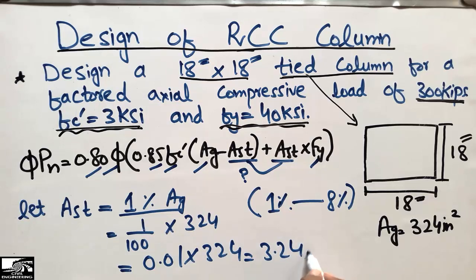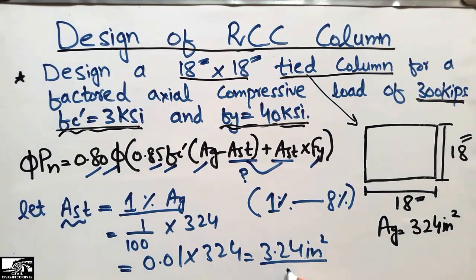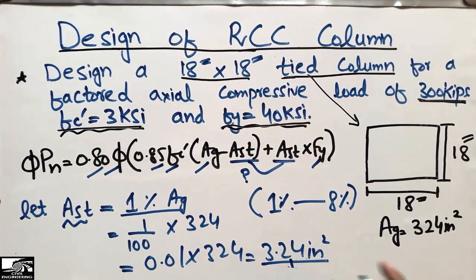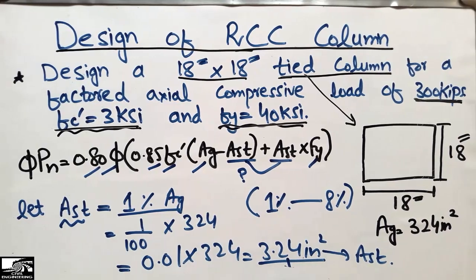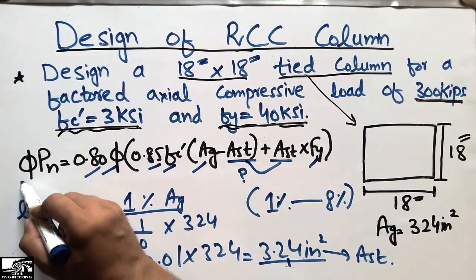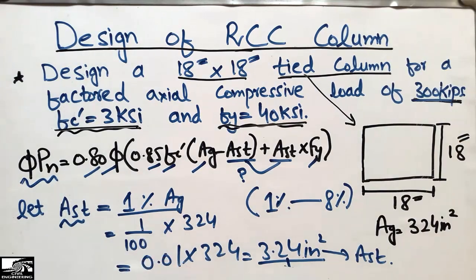So As = 0.01 × 324 = 3.24 in². The assumed area of steel is 3.24 in². Now that all values are known, we can substitute into the formula to check whether the column strength is greater than or less than the demand.